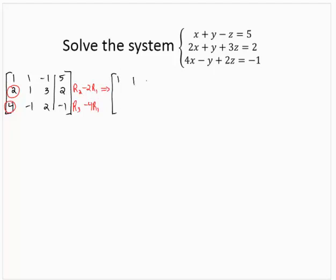Row 1 stays the same. Now, take the row 2 elements and subtract 2 times the row 1 elements: 2 subtract 2 times 1 is 0, 1 subtract 2 times 1 is negative 1, 3 subtract 2 times negative 1 is 5.